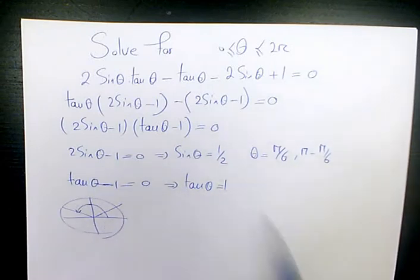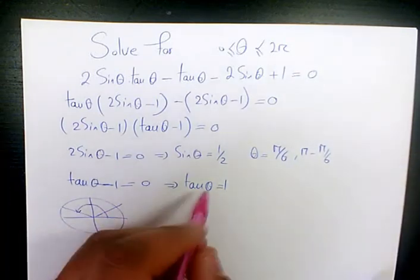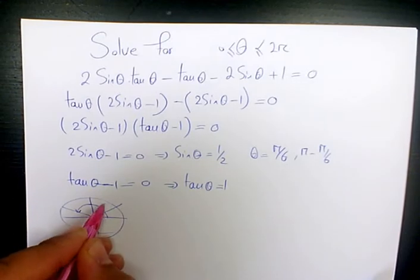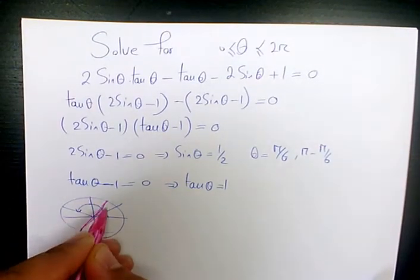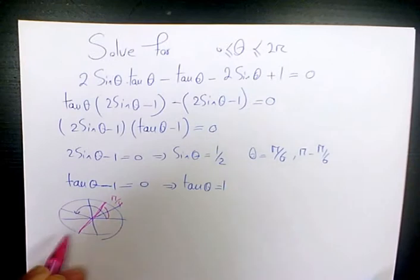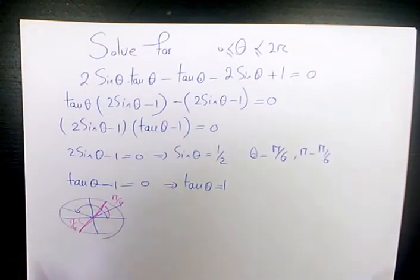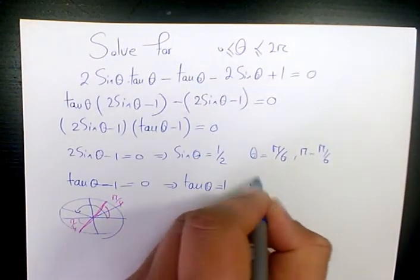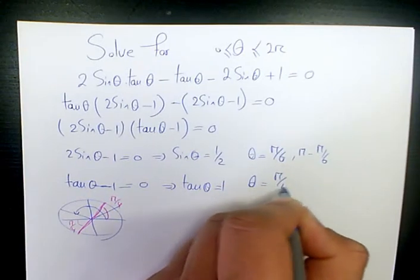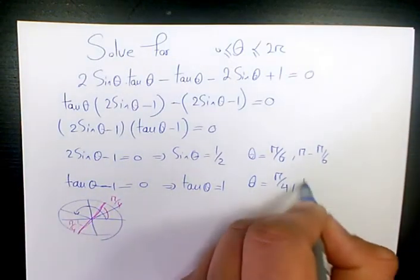And tan(θ) = 1. Tangent is positive in quadrant 1 and quadrant 3. So this one is π/4, and the second answer is going to be π + π/4.